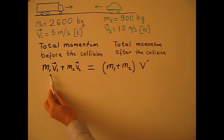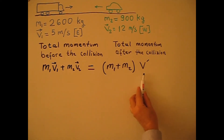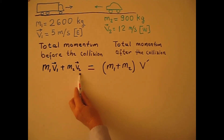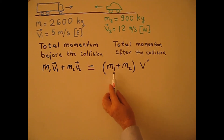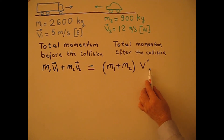The left side is total momentum before the collision; the right side is total momentum after the collision. This is the momentum of the truck, and this is the momentum of the car. Since the two vehicles stick together after the collision, it becomes one object, so we take M1 plus M2 together. This is the common velocity of the vehicles after the collision.